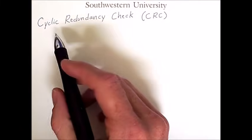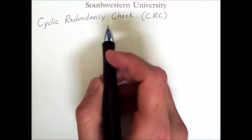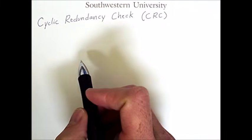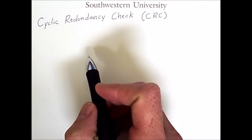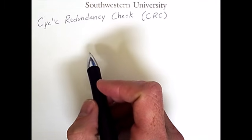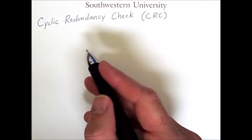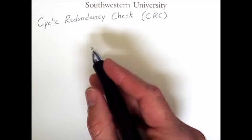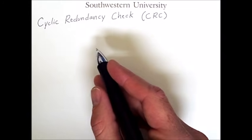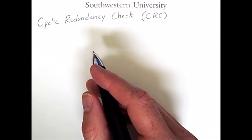This video is about the cyclic redundancy check. This is another means of error detection in network transmission, and some would refer to it as another form of checksum, but we'll use distinct terms to describe the two processes.